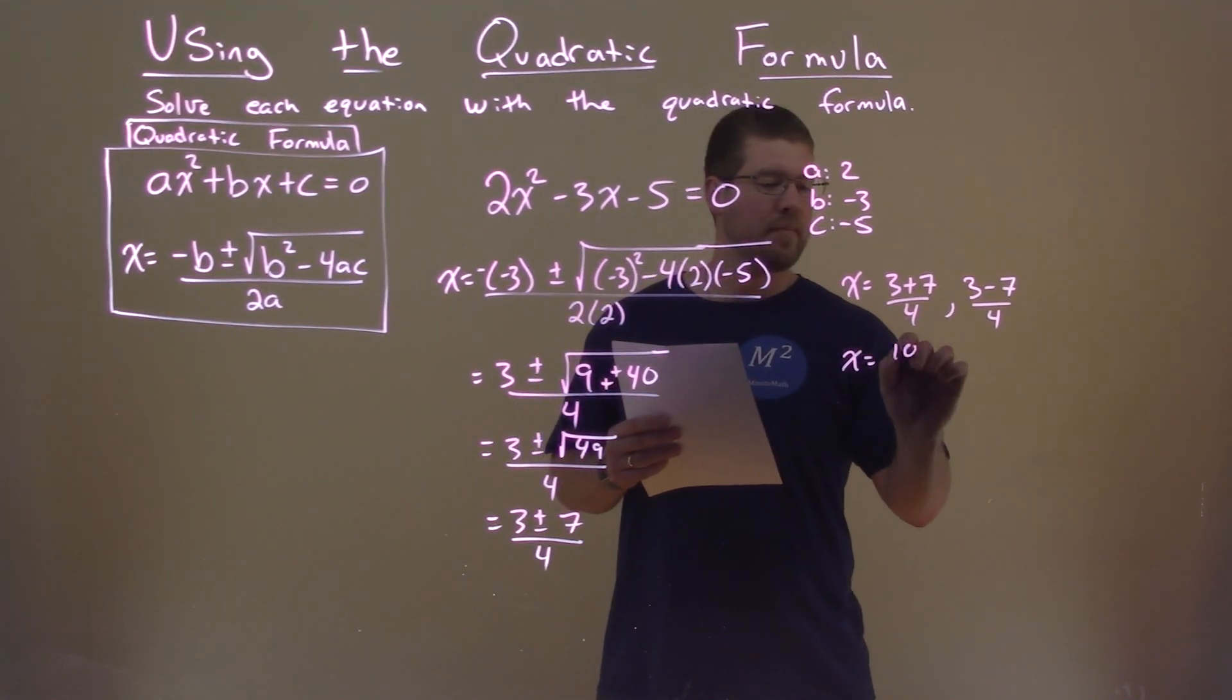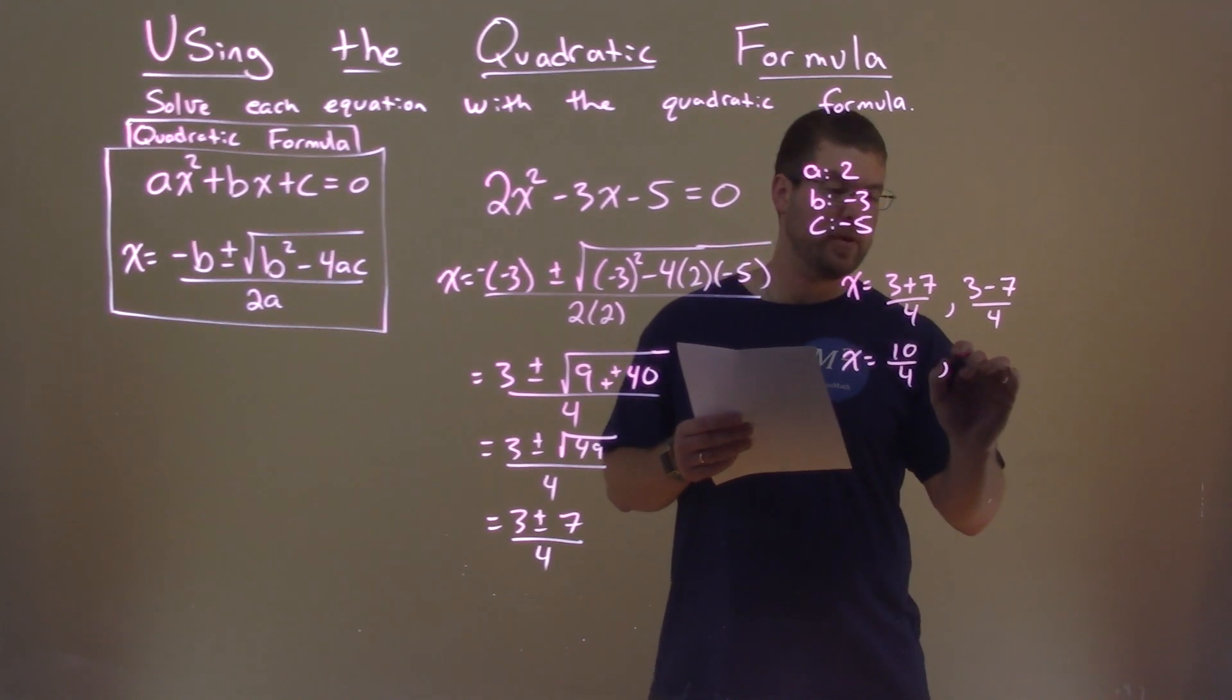Well, 3 plus 7 is 10, and 3 minus 7 is negative 4.